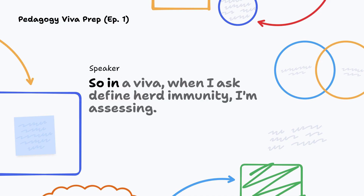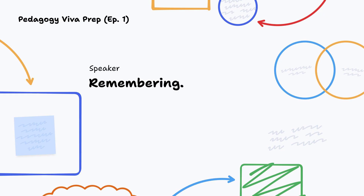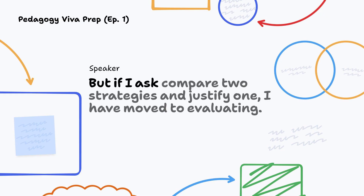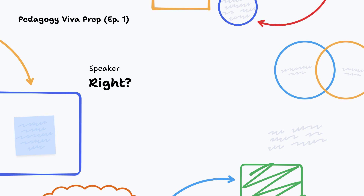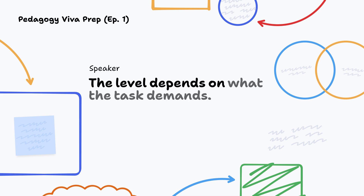So in a viva, when I ask 'define herd immunity,' I'm assessing remembering. But if I ask 'compare two strategies and justify one,' I've moved to evaluating, right? Exactly. The level depends on what the task demands.